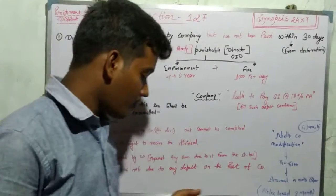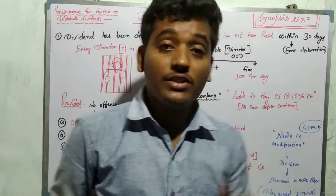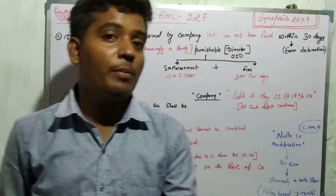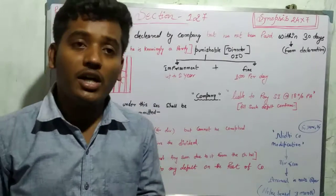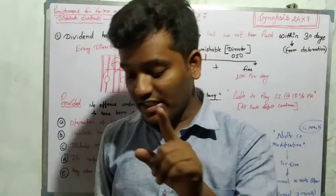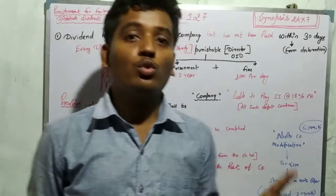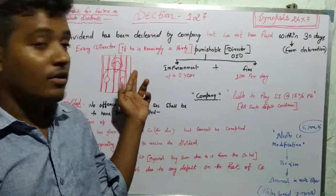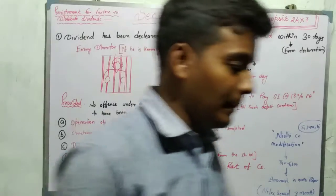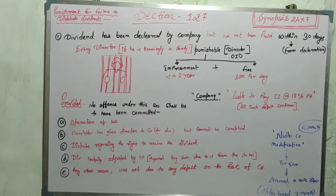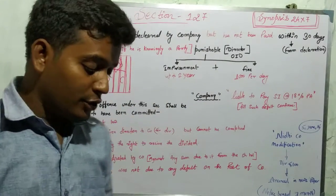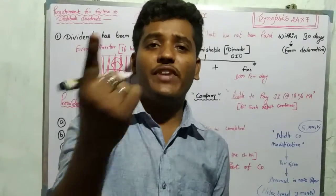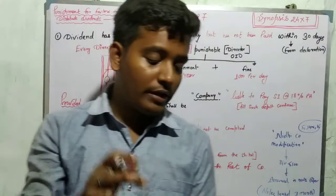If you are reading about Section 127, we will talk about punishment. When is punishment applicable? When we will not give dividends. That means withholding people's money is wrong. If someone's right is violated, they should get justice. Section 127 is a small section, only one subsection.